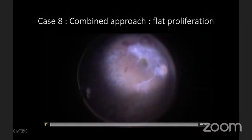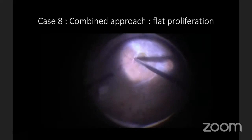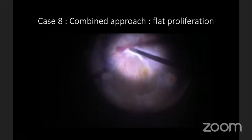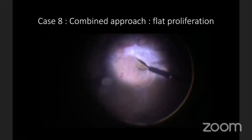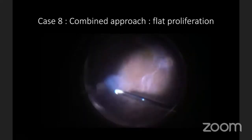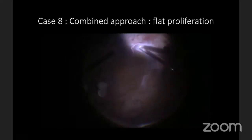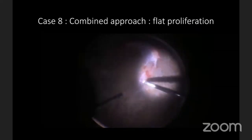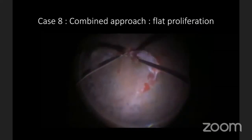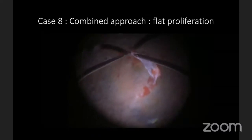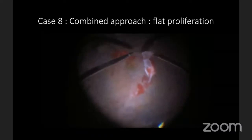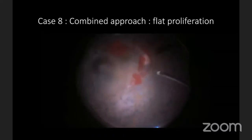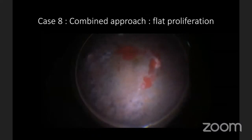For flat proliferation, a single technique may not work. Identifying the dissection plane in the periphery is very difficult, so we start from the center, dissect outward, induce PVD into the periphery, and truncate the cone all around the fibrovascular proliferation. Once the entire fibrovascular proliferation is segregated from the periphery, we attack the membrane centrally, completing dissection. This combined approach is essential for flat proliferation where no specific plane is available.